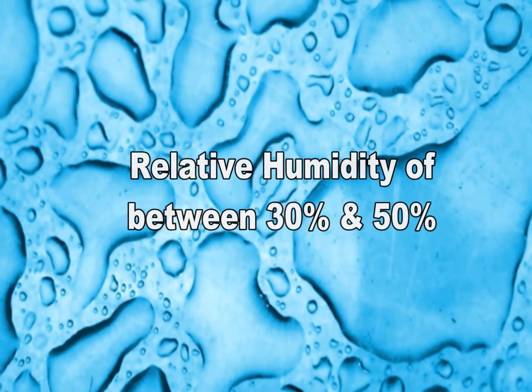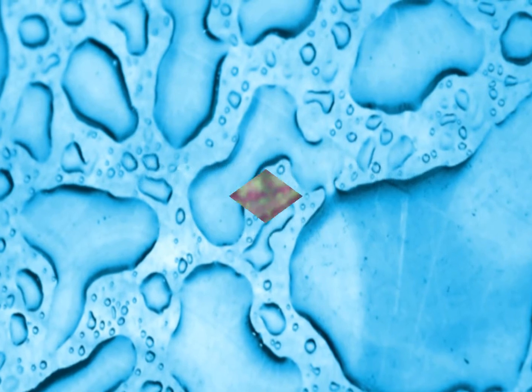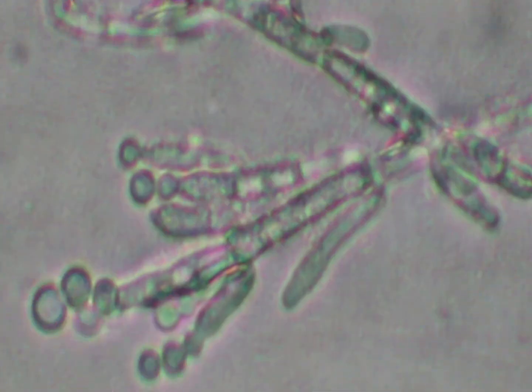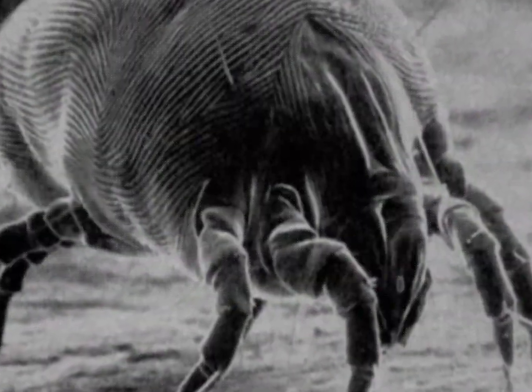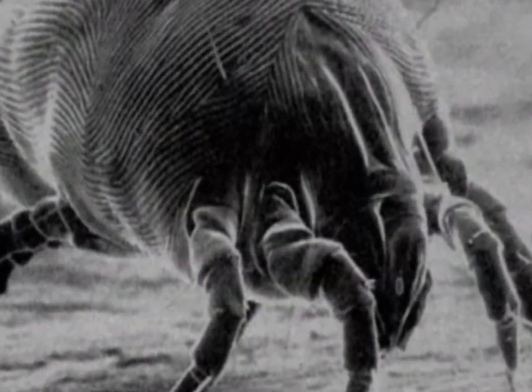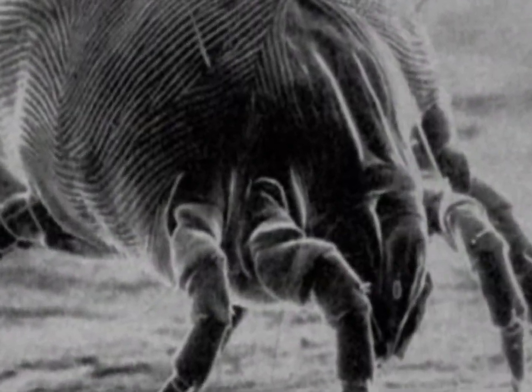Any standing water, water damaged materials, or wet surfaces also serve as a breeding ground for molds, mildew, bacteria, and insects. House dust mites, the source of one of the most powerful biological allergens, grow in damp, warm environments.